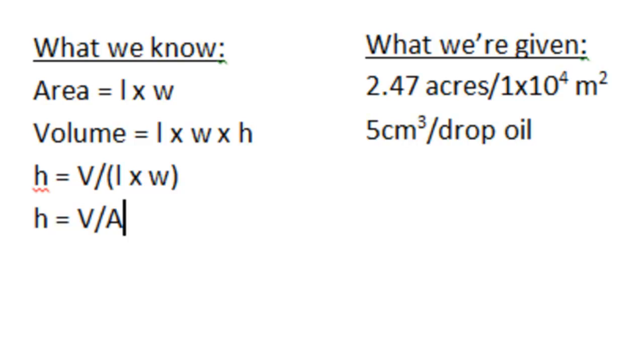So then we look at what we're given in the problem, and we could look at the given information as two conversion factors: 2.47 acres per 10,000 meters squared, and 5 cubic centimeters per drop of oil. Once we have this information, we could begin to piece together a mathematical setup to come to a solution.